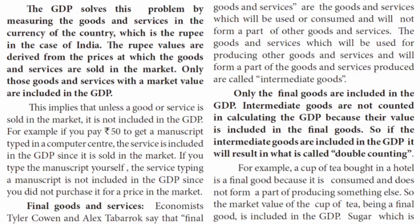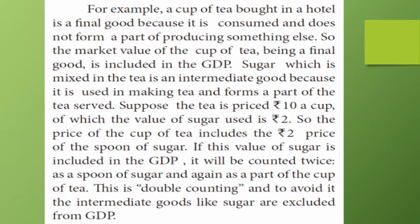Next, we need to understand Final Goods and Services versus Intermediate Goods. Final goods and services are those sold to the end consumer. Intermediate goods are the inputs used to make other goods. Only final goods are counted in GDP to avoid double-counting — if we also counted intermediate goods, we would double-count the value of the product.